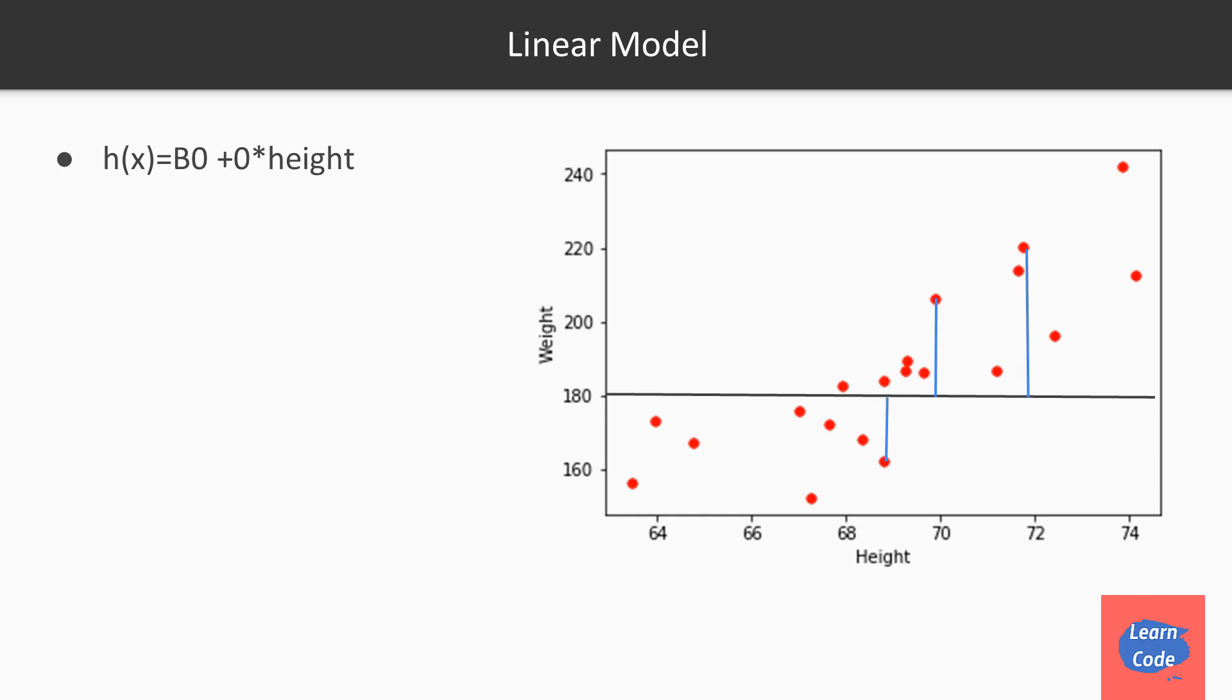Next, let's say we make the slope of the line 0. So we get a flat line which has huge errors. So our task is to find the perfect fit so that we can reduce these errors between the actual weight and the predicted weight.